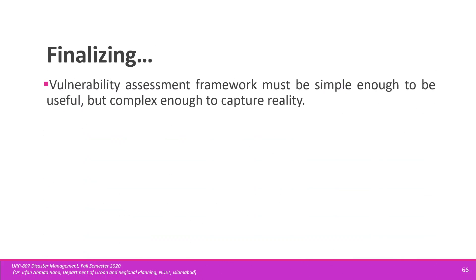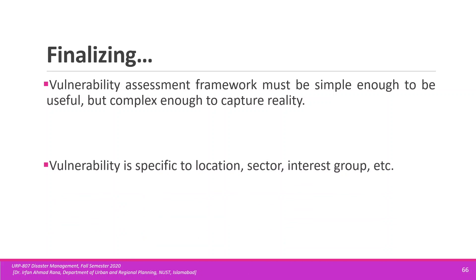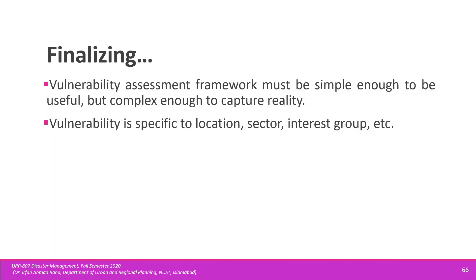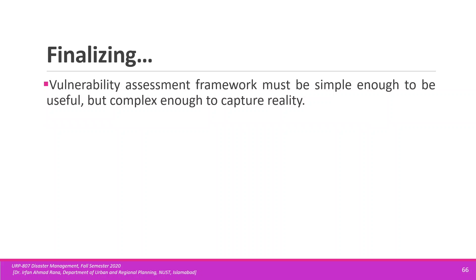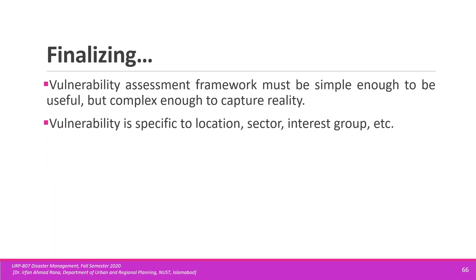In the end, we must be sure about finalizing the framework. The final framework should be simple yet complex enough to capture reality. For example, in an area that is very poor, you should not exclude an indicator of poverty. The indicators must represent the real conditions of the area, and those factors may be specific to location, sector, or group.